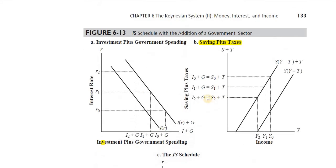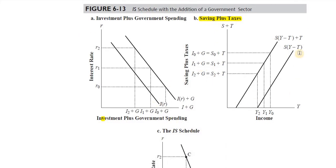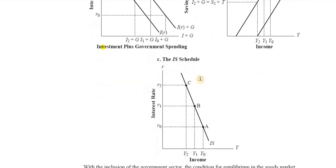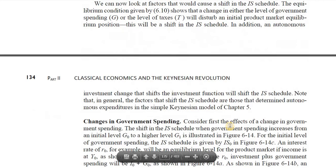The government sector is simply incorporated like investment and saving. Government expenditure, being an addition to investment, shifts the investment curve rightward. Being an addition to saving, it shifts the saving curve upward. That is how again we see the derivation of the IS curve.